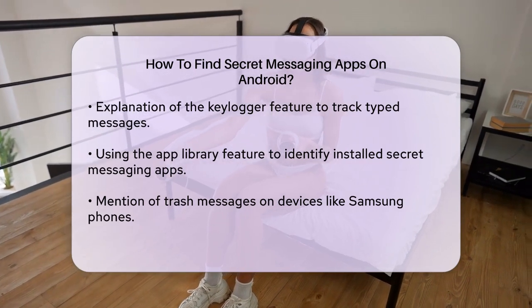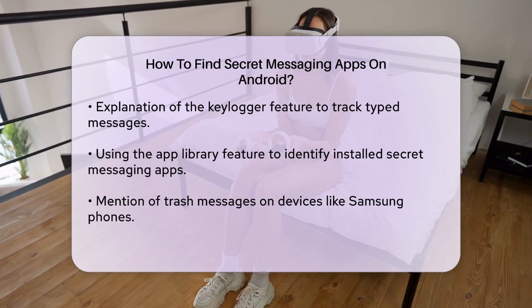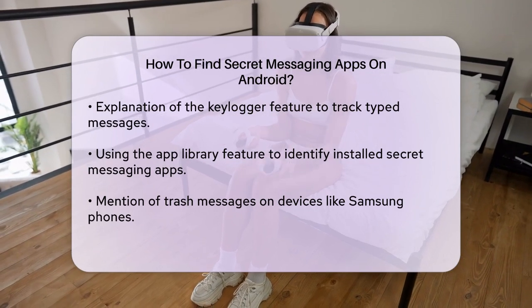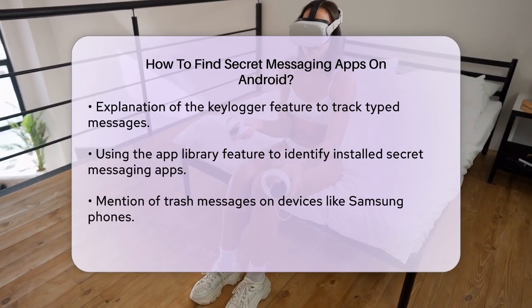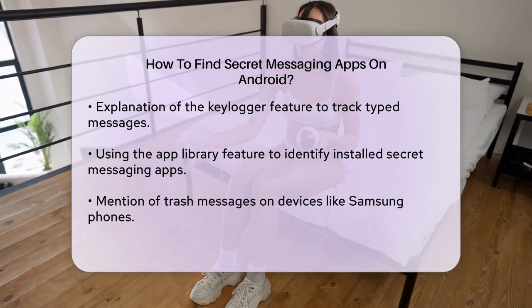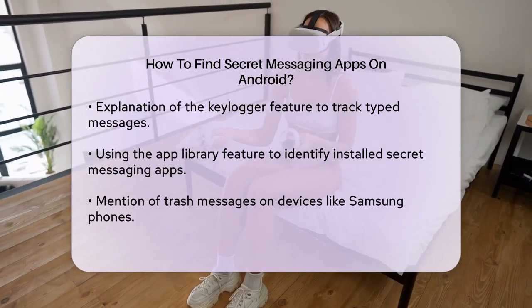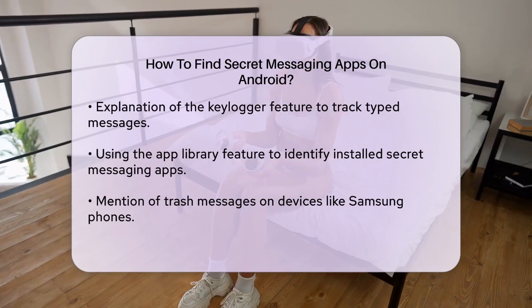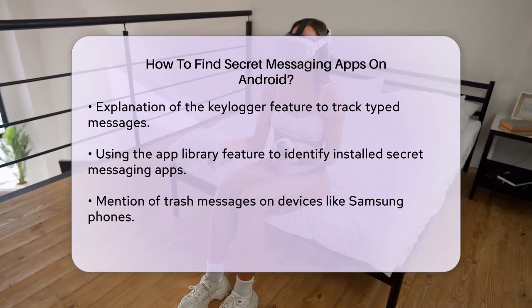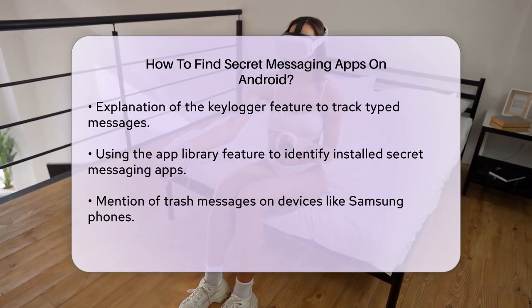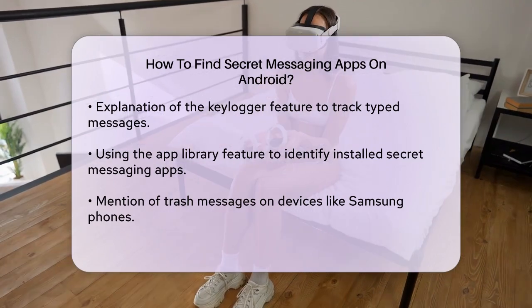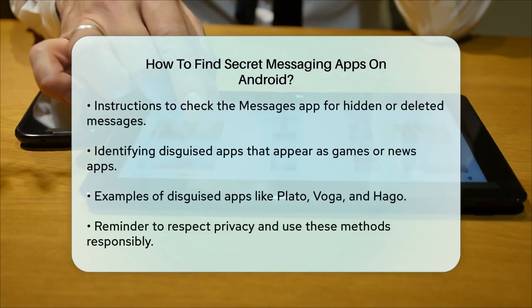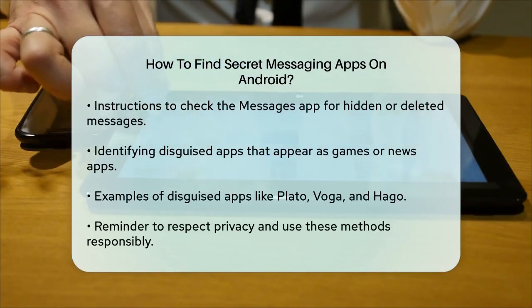Checking trash messages: some Android devices, like Samsung phones, might block suspicious messages and put them in a trash folder. To find these hidden messages, go to the Messages app, tap the three dots in the upper corner, and then select Trash. Here you can view any messages that were hidden or deleted.